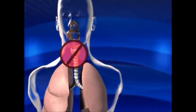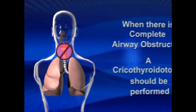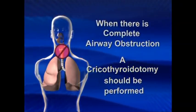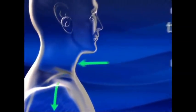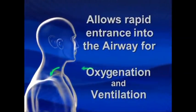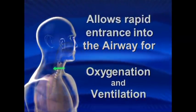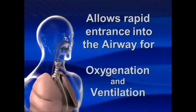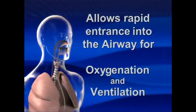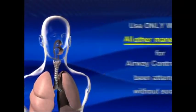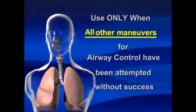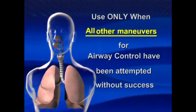When there is complete airway obstruction, a cricothyroidotomy should be performed. This emergency life-saving procedure allows rapid entrance into the airway for oxygenation and ventilation in patients in whom airway control is not possible by other methods. It is indicated when all other maneuvers for airway control have been attempted without success.